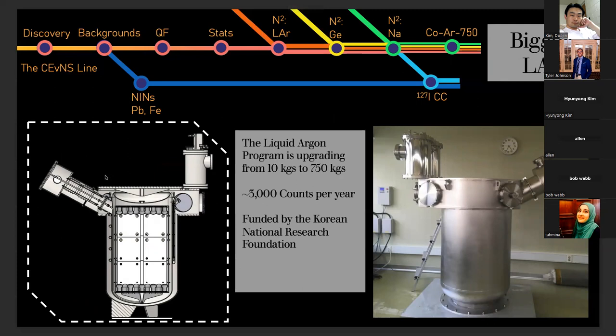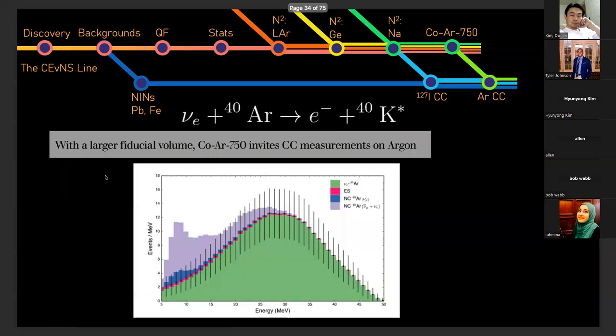Towards the going bigger ethos, this is the large scale liquid argon CEvNS detector. We're graduating from 10 kilograms to 750 kilograms with COLAR 750. This will be enjoying about 3000 CEvNS events a year and is in collaboration between Indiana and Korea. I won't say too much about this detector other than it also comes along with its own charge current inelastic measurement, which will be on argon. This is really important to experiments like DUNE. So we're charging ahead with these complementary searches, all the while doing CEvNS searches, moving towards this high precision.